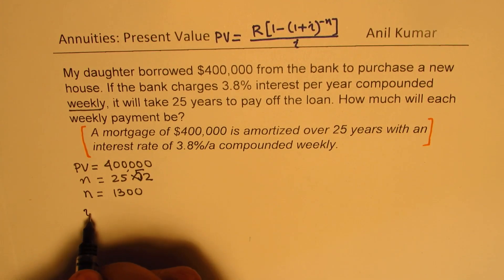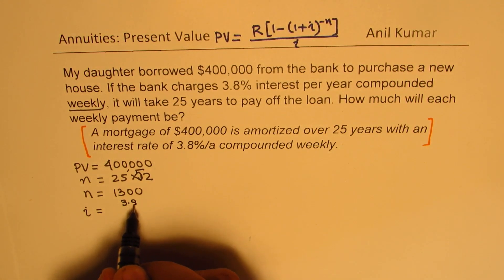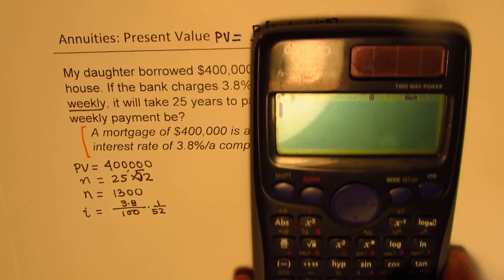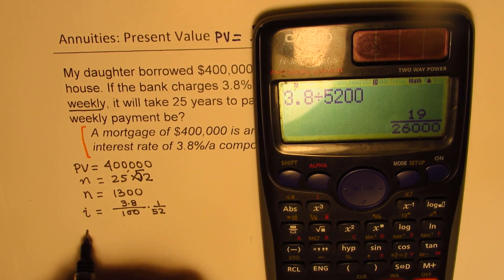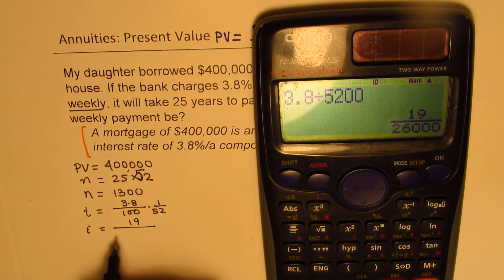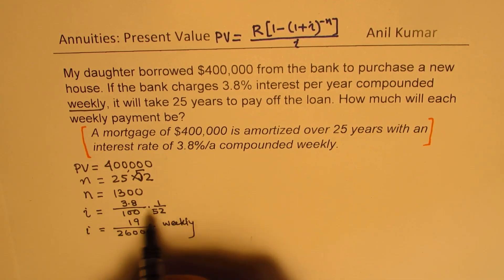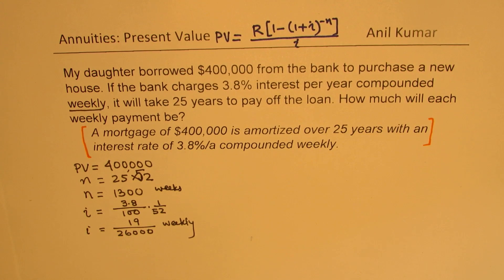Now, the weekly interest rate I: this is 3.8% per year compounded weekly, so we divide 3.8% by 100 and then by 52. That gives us 3.8 divided by 5,200, which simplifies to 19 divided by 26,000. So the weekly interest rate is 19/26,000, and N is 1,300 weeks.